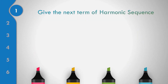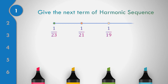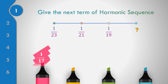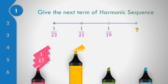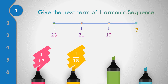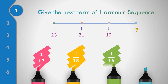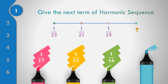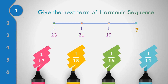Let us recall what you have learned about the harmonic sequence. Let us give the next term of this harmonic sequence. Given 1/23, 1/21, and 1/19 — do you think the answer is 1/17, 1/15, 1/16, or 1/14? The answer is equal to 1/17.